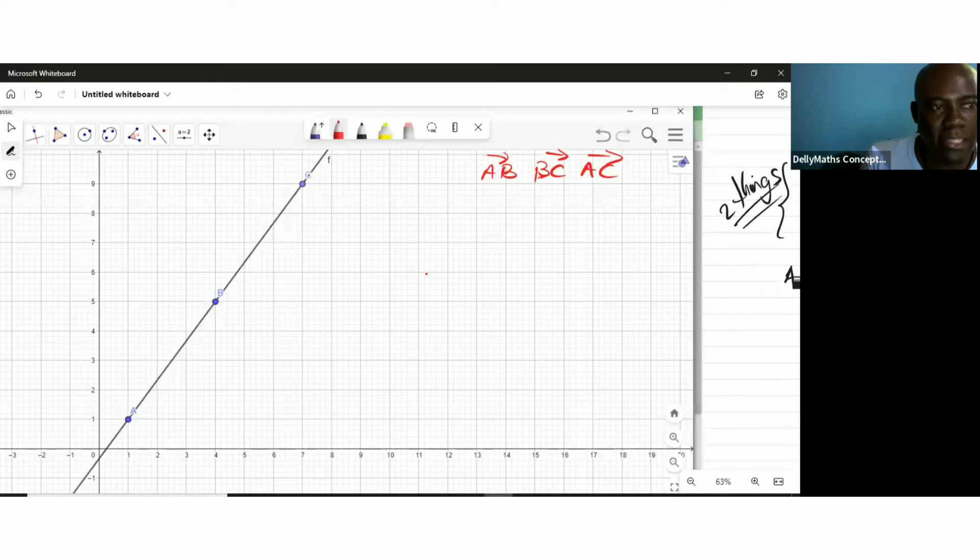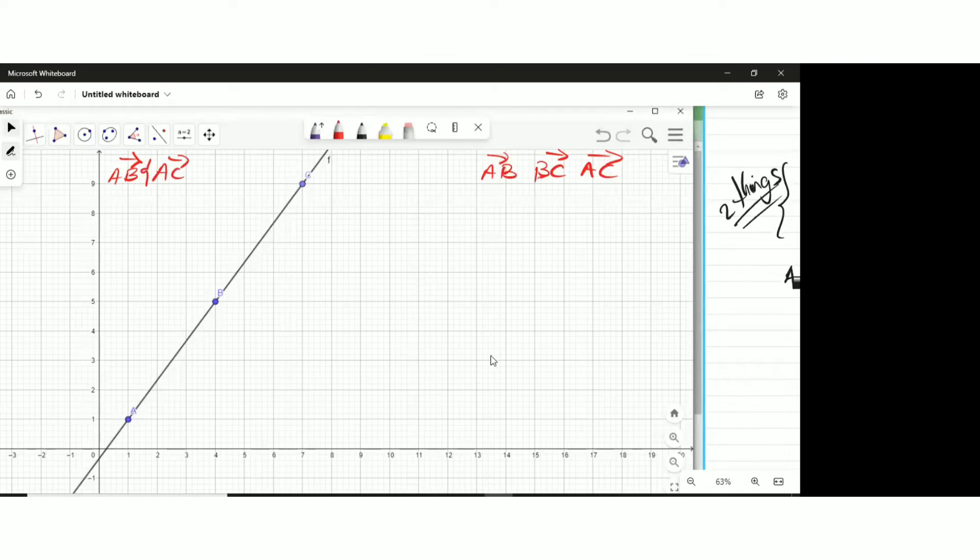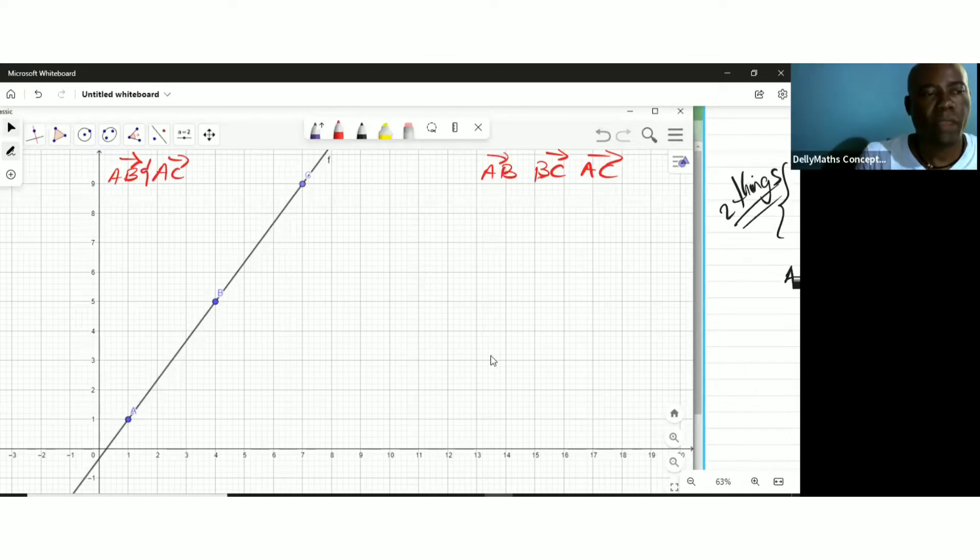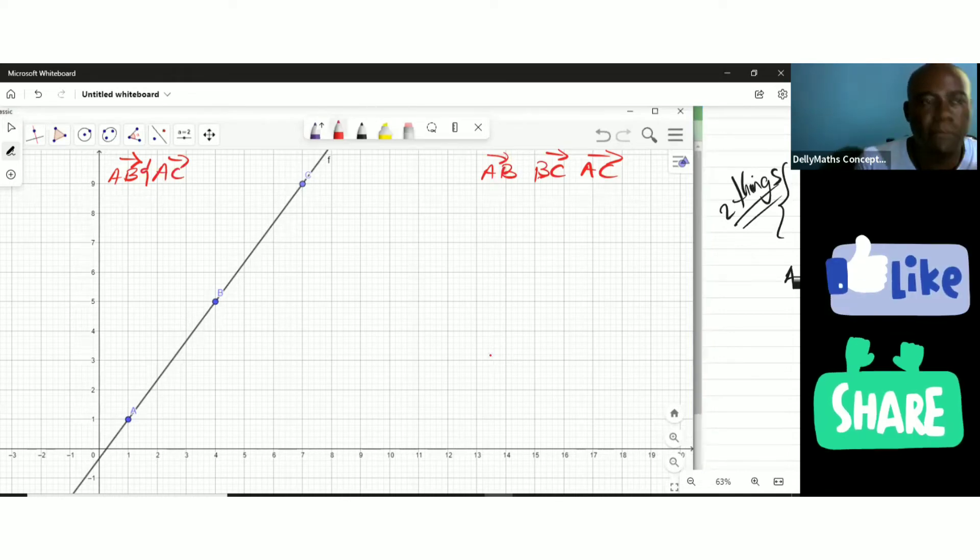We will only pick two. We don't need all three. So I'm going to pick AB and AC. The result will be the same. Obviously we already have part of the deal because the common point is already there.